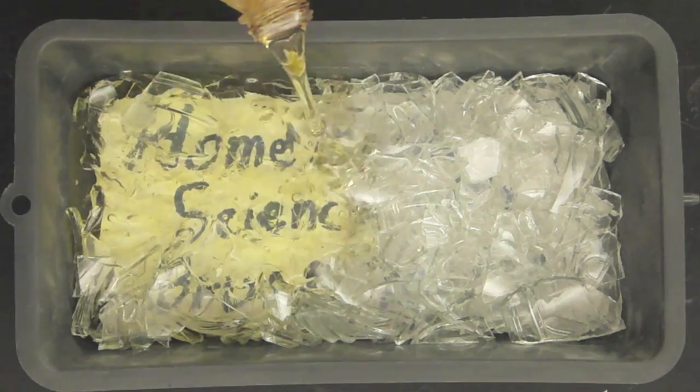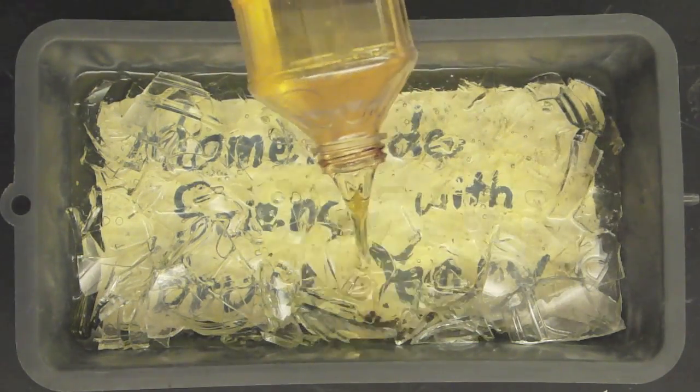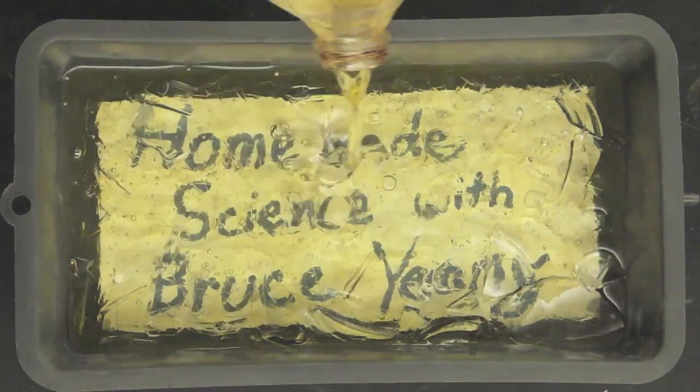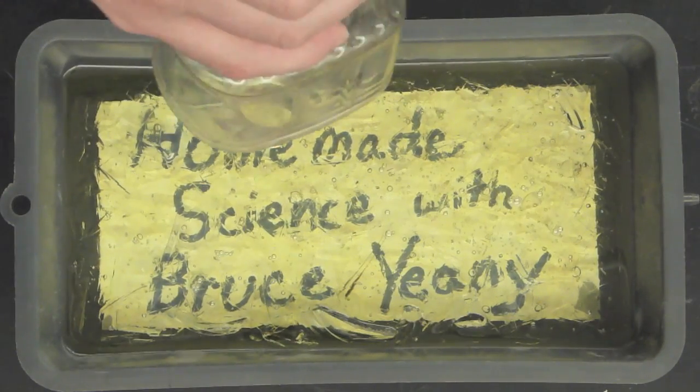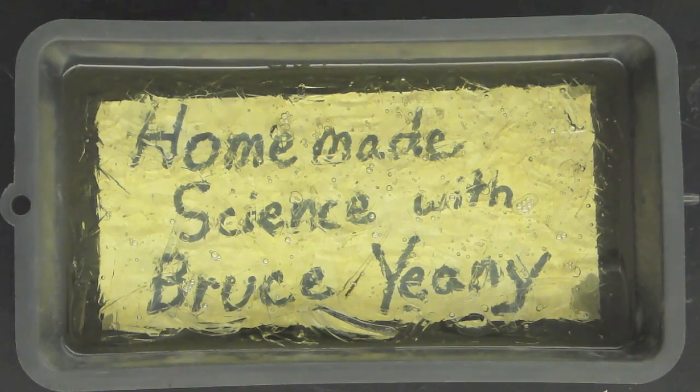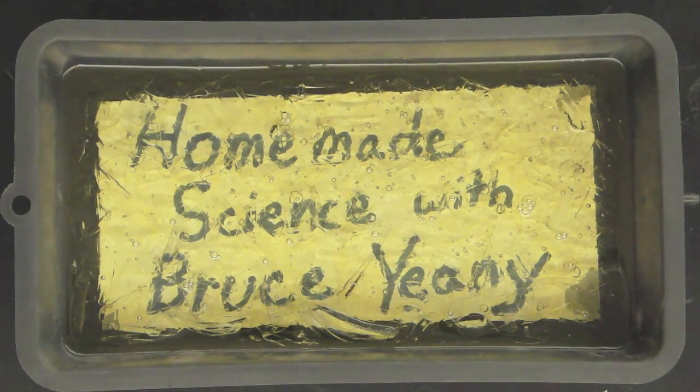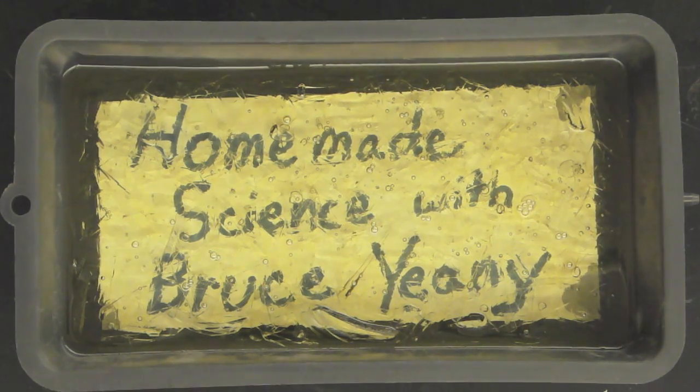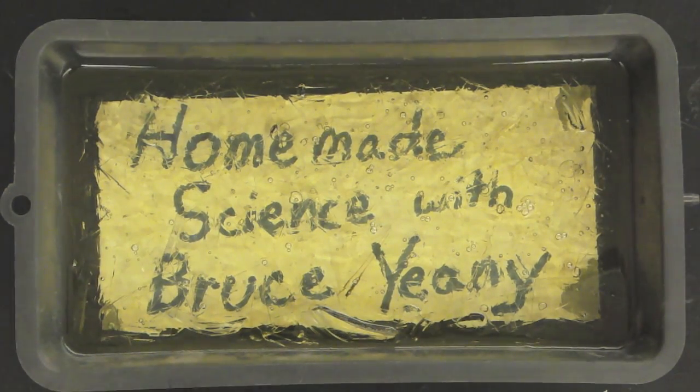Now, this doesn't work quite as well as the Pyrex test tubes for glassware, but it is passable. In this case, the oil is reducing the reflection and refraction that's taking place and allowing the light rays to pass in straighter paths so that we could see what's underneath the chips of glass.